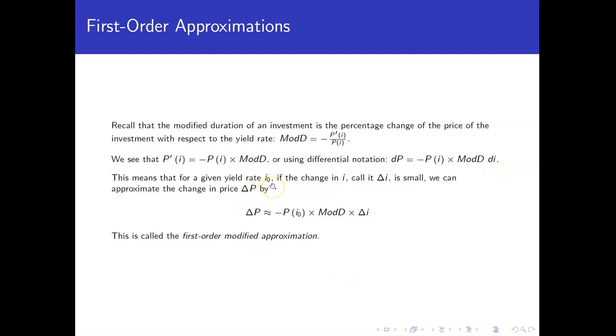So for a given yield rate, say i0, let's call the change delta i, and assuming that it's small, we can approximate the corresponding change in price by plugging in i0 in for the price. And using the modified duration multiplied by the change in interest rate, that's going to give us a change in price. So again, we can use the modified duration to help us get an approximate change in price based on a change in the interest rate.